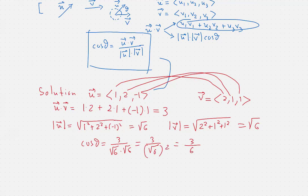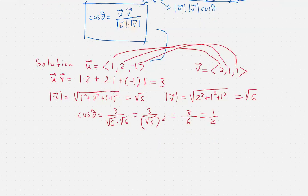Usually we would stop right here. Unless we use the inverse cosine function through a calculator, we cannot really approximate the angle. But in this particular case, we have a very characteristic cosine of one half, which corresponds to the angle theta equal to pi over three. So even though it was not asked of us to find the angle, in this case we can specify that it's pi over three. However, what was asked was to find the cosine, which has been accomplished. Thanks for watching.